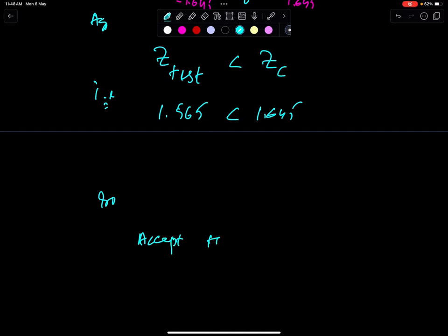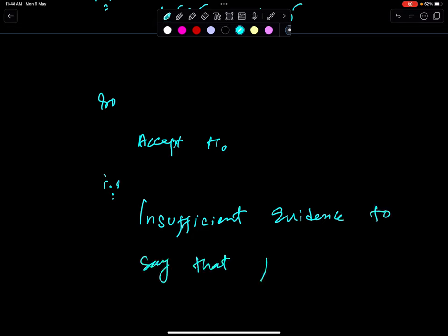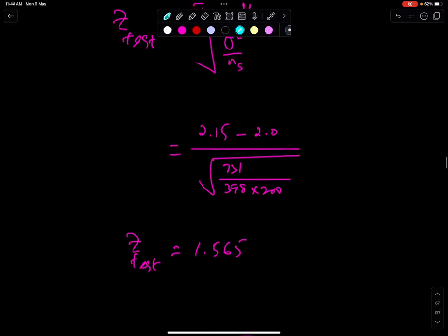Accept H naught. That is, insufficient evidence to say that mu has changed. There is no evidence to say that mu has changed. This is the way to solve the questions of these types, continuous distribution.